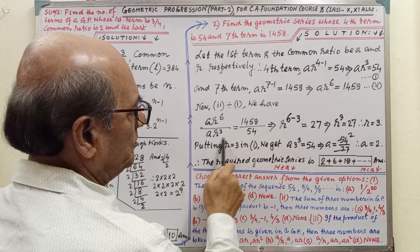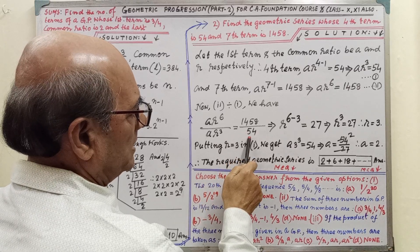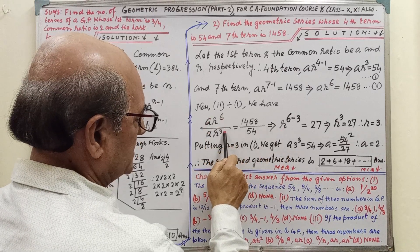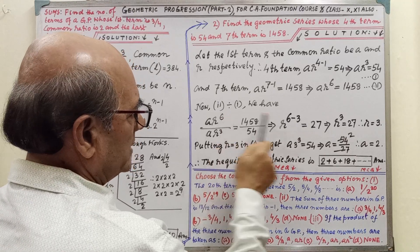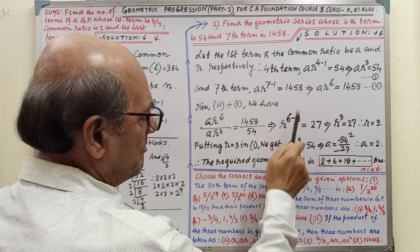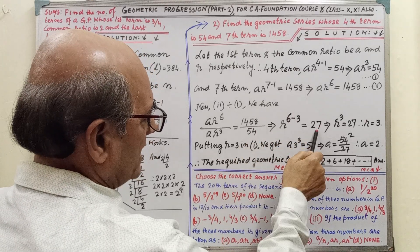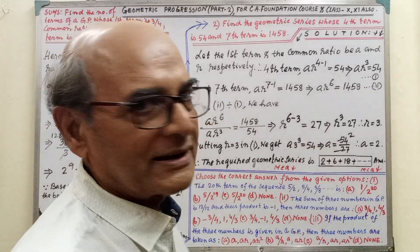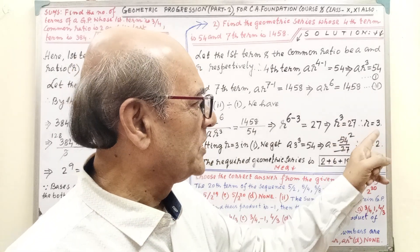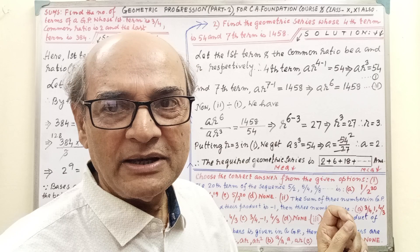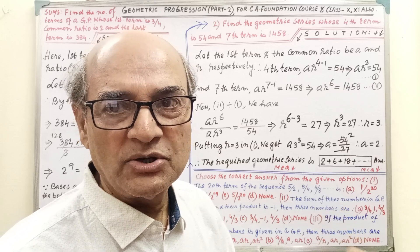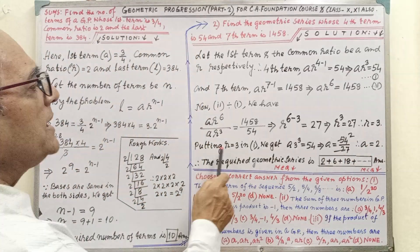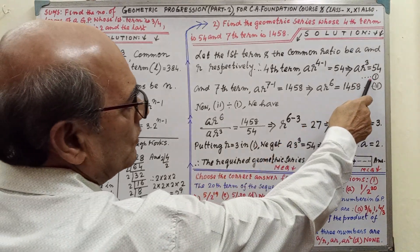A and A will be cancelled. R^6 minus 3, this 3 is coming denominator to numerator so power will be minus. By cancellation it is coming 27. So R^3 = 27. Cube root of R, that is 3. Cube root of 27, if you take the cube root that is 3×3×3. Therefore R = 3. I think it is clear.